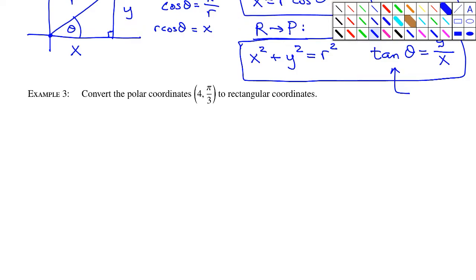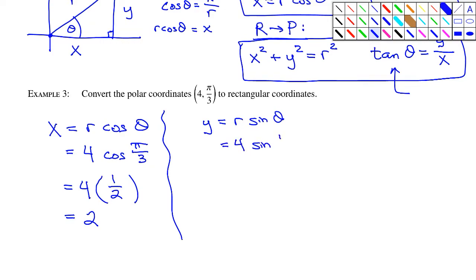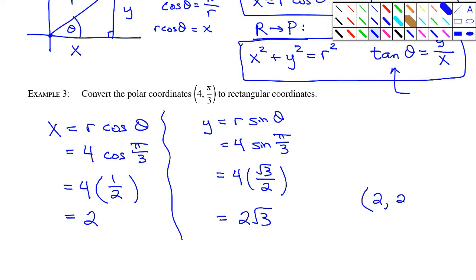Example 3: convert polar coordinates (4, π/3) to rectangular. Using the formula: x = r cosθ = 4 × cos(π/3) = 4 × (1/2) = 2. For y: y = r sinθ = 4 × sin(π/3) = 4 × (√3/2) = 2√3. So the rectangular point is (2, 2√3).